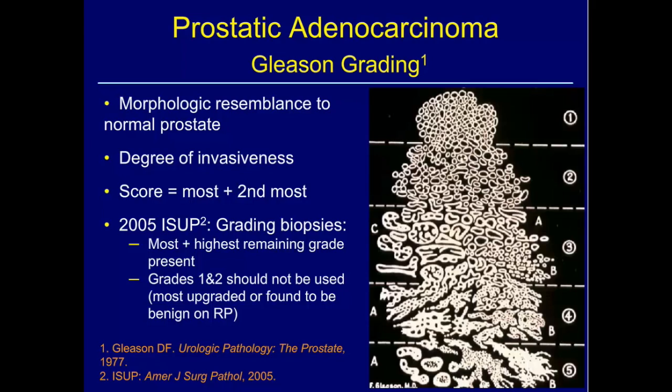When you look at low-grade tumors, you've got acini with well-differentiated cells lining them and a nice rounded border, meaning they're not very infiltrative. When you get all the way to Gleason pattern five, you're not making glands anymore — just sheets of infiltrating cells. I feel all of these cells are anarchists, out for their own good, and everything in between.